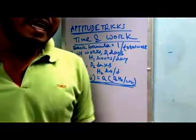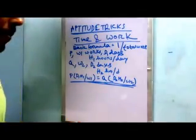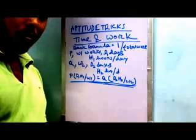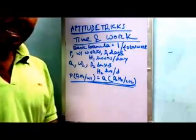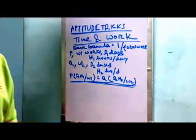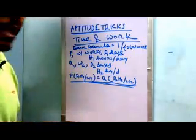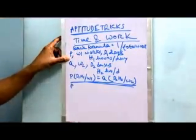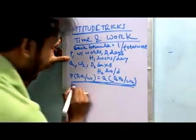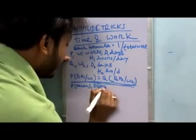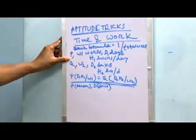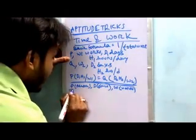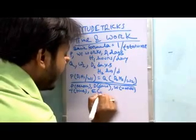Similarly, Q is working on a W2 project and completed it in D2 days by working H2 hours per day. The equation becomes: D1 × H1 / W1 = D2 × H2 / W2.